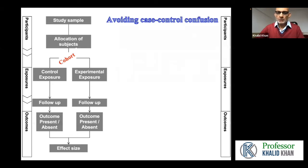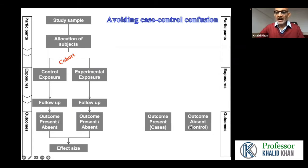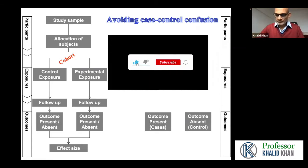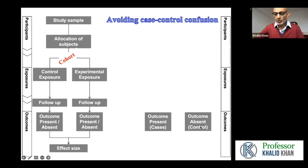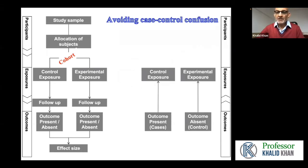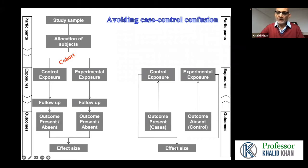Compare this to another design where you start the study with outcomes already known. For example, you take some people who are known to have a particular outcome — say they suffered COVID — and compare them to a group who did not have COVID by going back in time to see whether they received chloroquine or did not receive chloroquine. In this case, time is going backwards. We start with the outcome and measure exposures, then use all this information to calculate an effect size. This type of study is called a case control study.